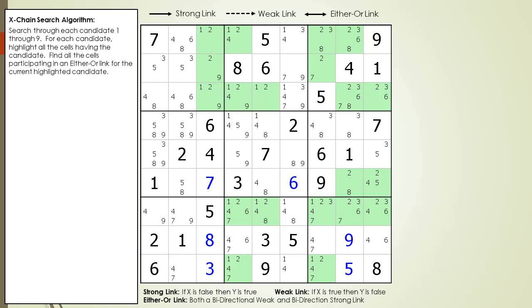Once we highlight all the cells having a possible 2 candidate, we search for all the cells having an either-or link. An either-or link is a relationship between two cells where either one cell is true or the other cell is true. Both can't be false and both can't be true at the same time. It's either one or the other.